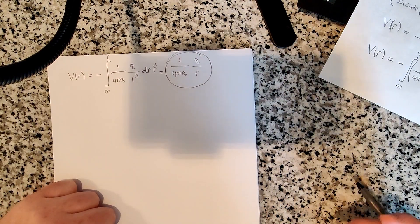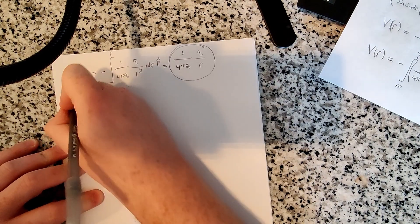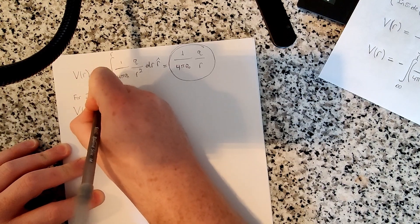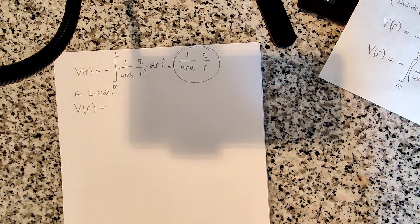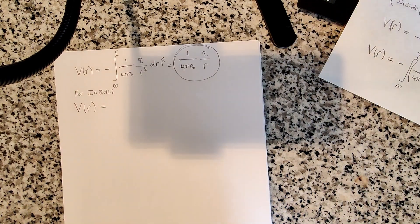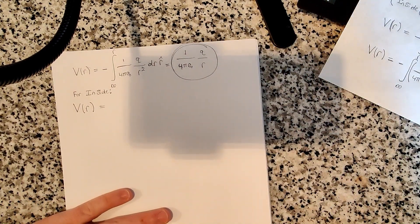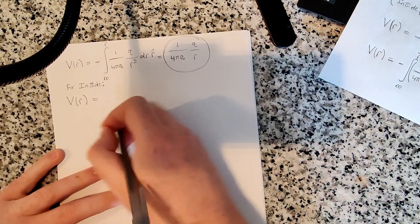Now let's find the potential inside the sphere. In this case we're going to have two integrals, because to get from infinity to a point inside the sphere, we cross the region outside the sphere first. It's like calculating work — potential is just work per unit charge. So we'll have one integral from infinity to the radius R, and then another from R to little r inside.